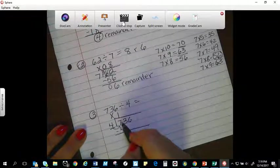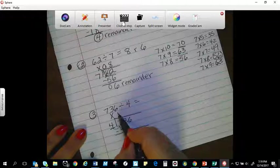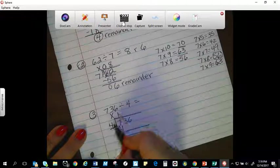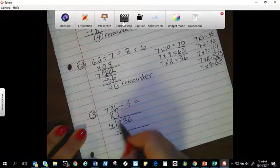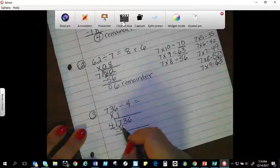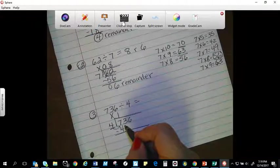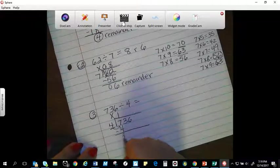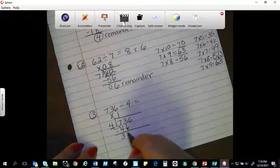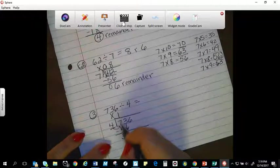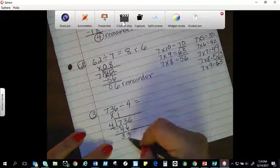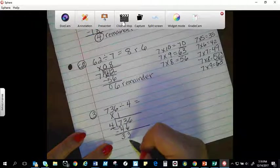If I did two, two times four equals eight, and eight would be too big. So one is my largest. I'm going to subtract it out, that becomes a three. Bring down, that becomes a thirty-three.